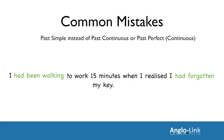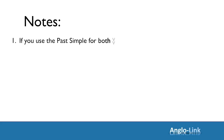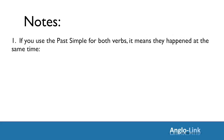Just a couple of notes on situations where you might see the past simple tense used twice in the same sentence. If you use the past simple tense for both verbs in a sentence, it means that the two actions happened at the same time. For example: He said hello when he arrived — the two actions happened at the same time and were the same length: two quick actions.